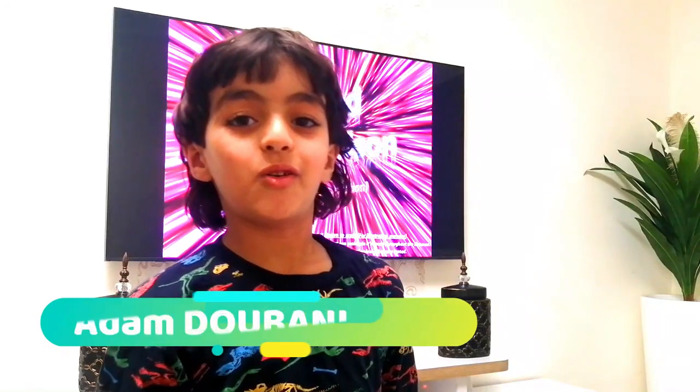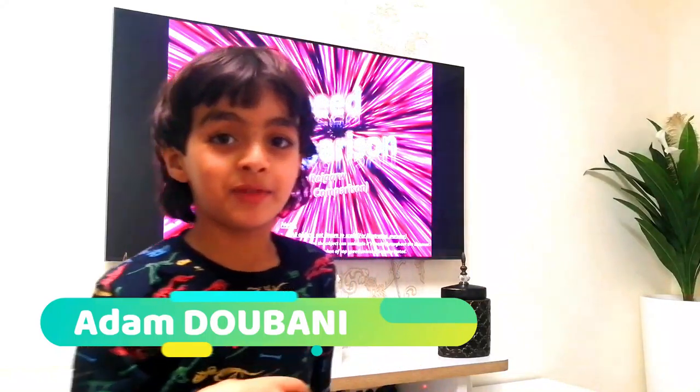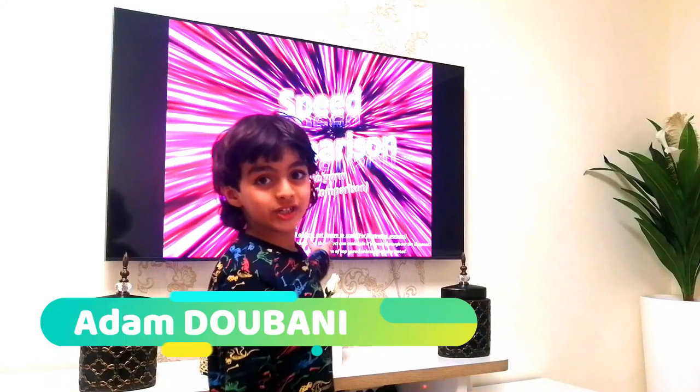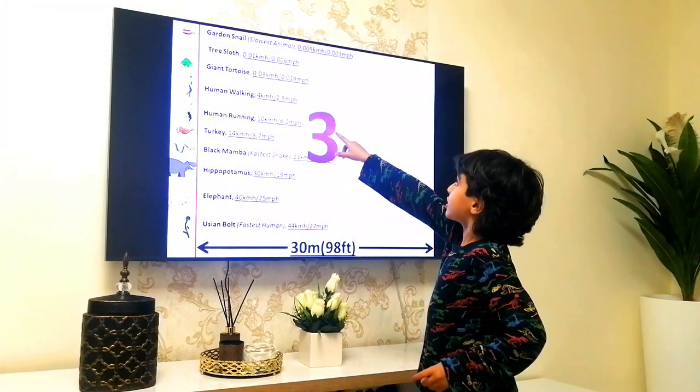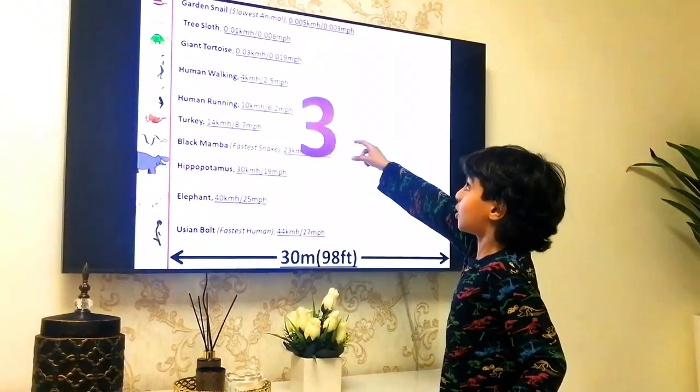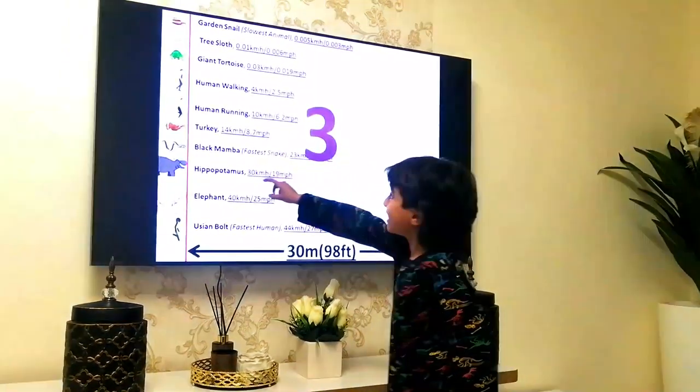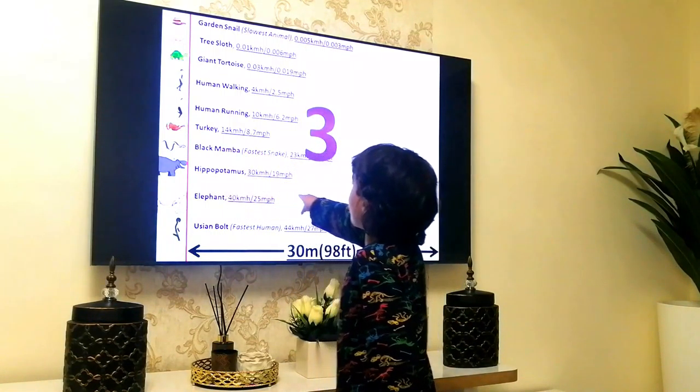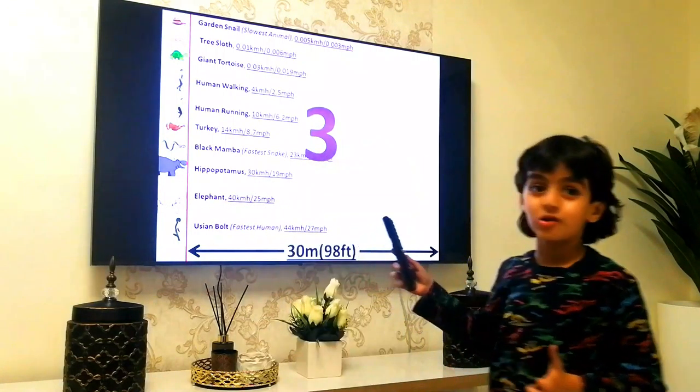Hey guys, today we're watching this new video where we are going to compare some animals. This video is named Speed Operation. We have these animals: the garden snails, tree sloth, giant turtle, human walking, human running, turkey, black mamba, hippo, Thomas gazelle, and elephant.